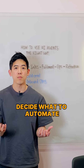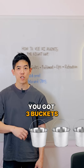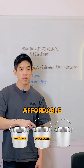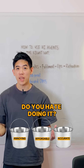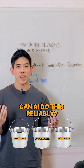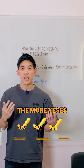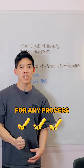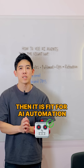Decide what to automate. Look at each step and ask these three questions — you've got three buckets: annoying, affordable, accurate. Do you hate doing it? Is it expensive to do it yourself? Can AI do this reliably? The more yeses, the better. If you can get three yeses for any process, then it is fit for AI automation.